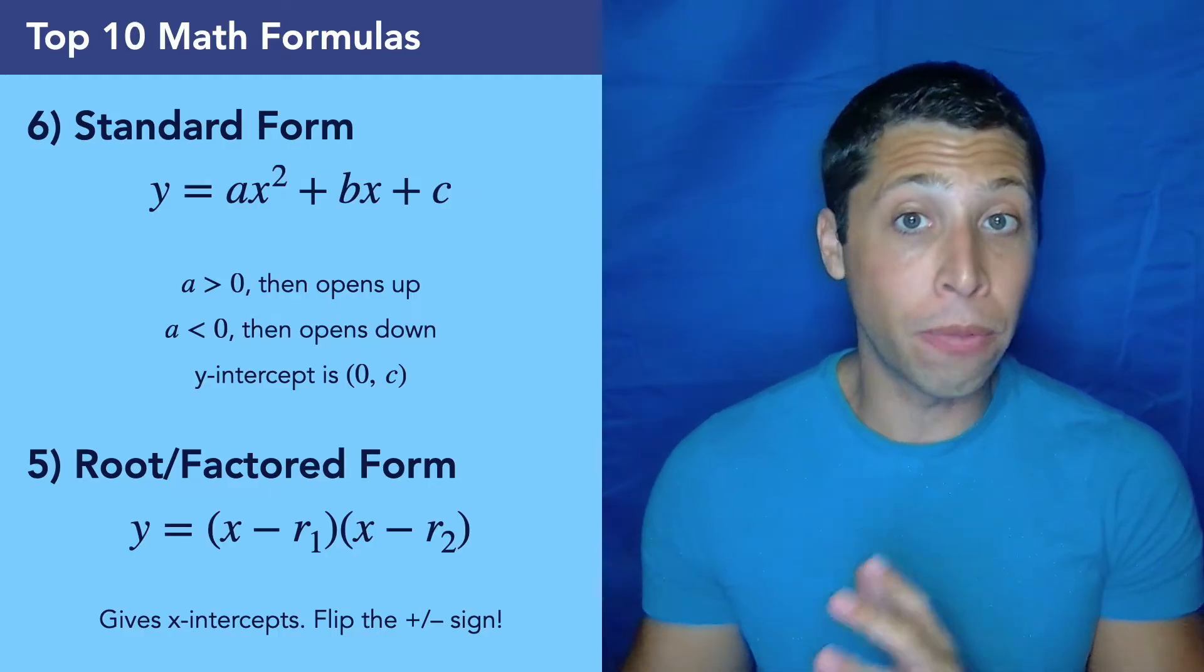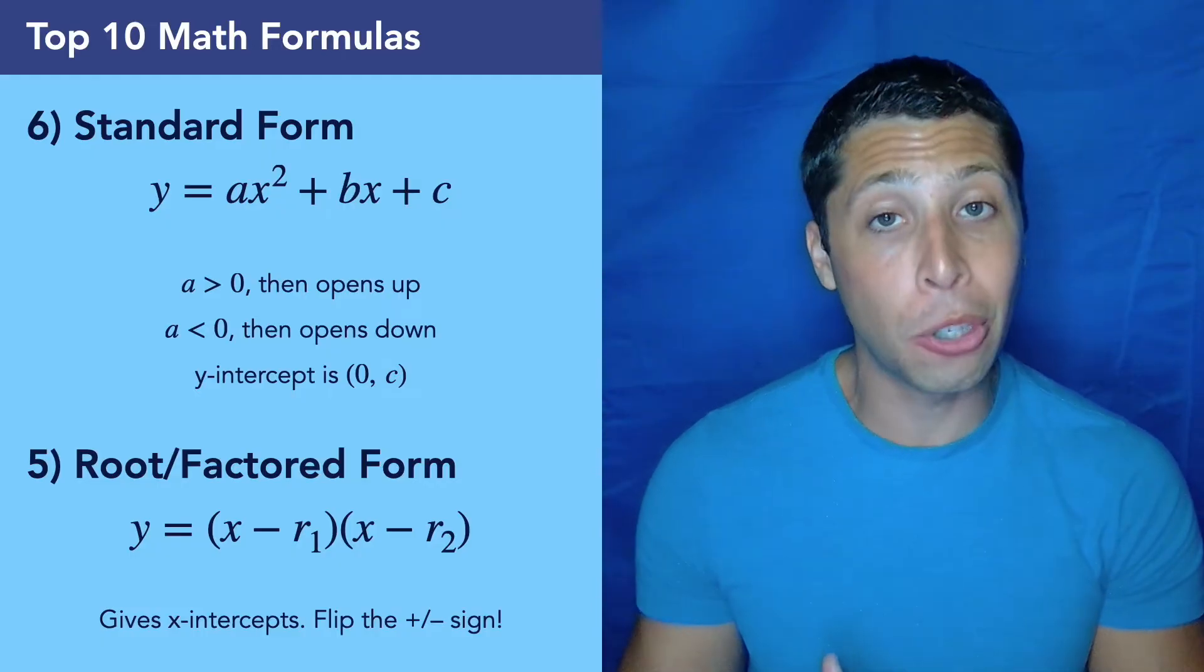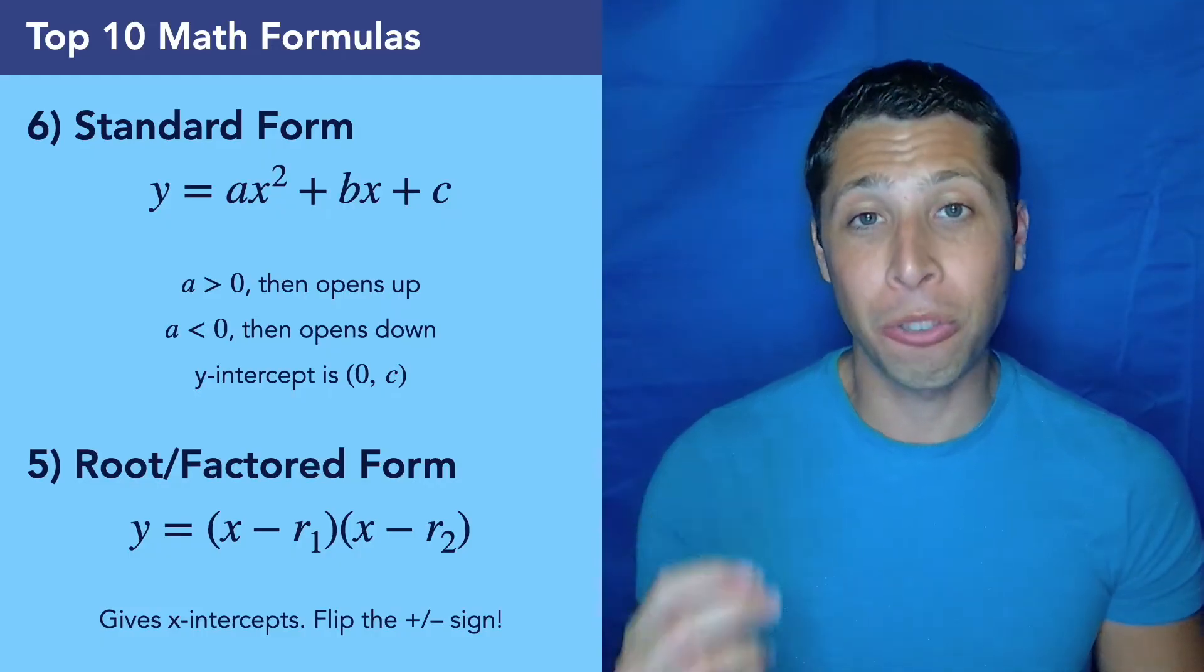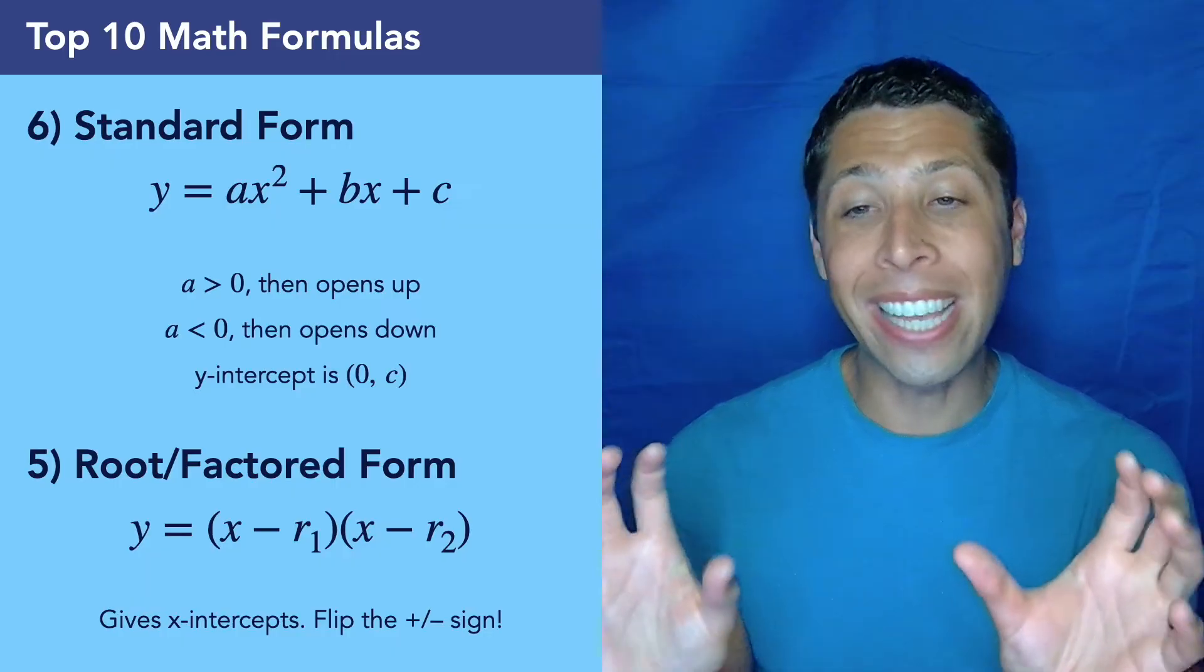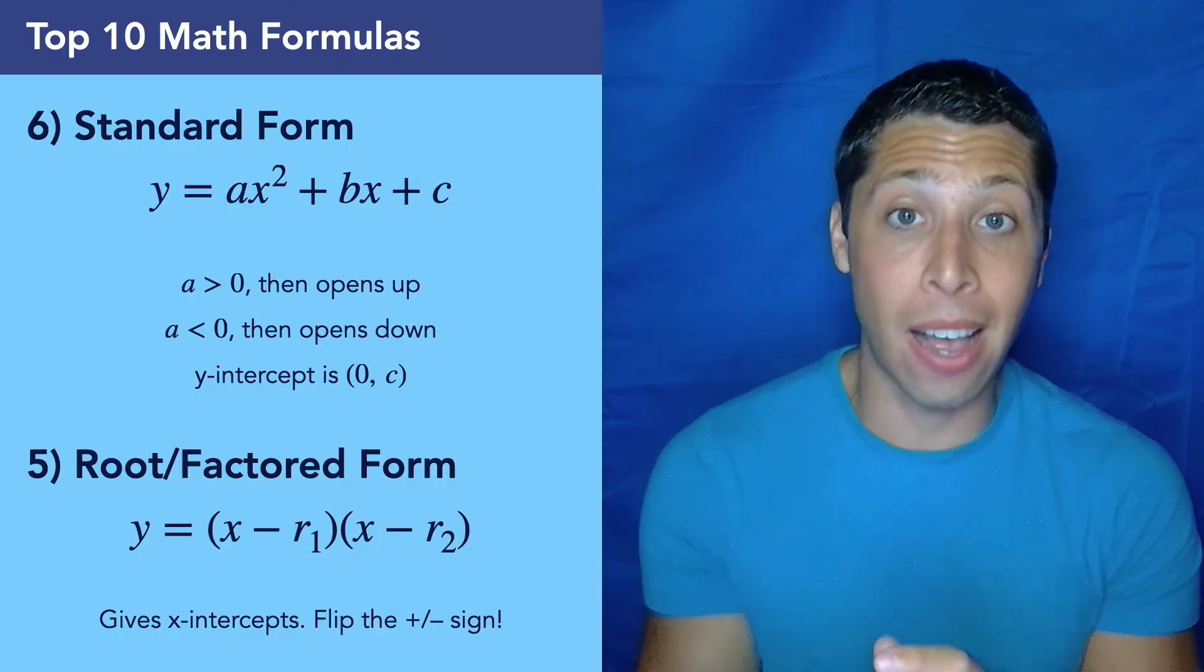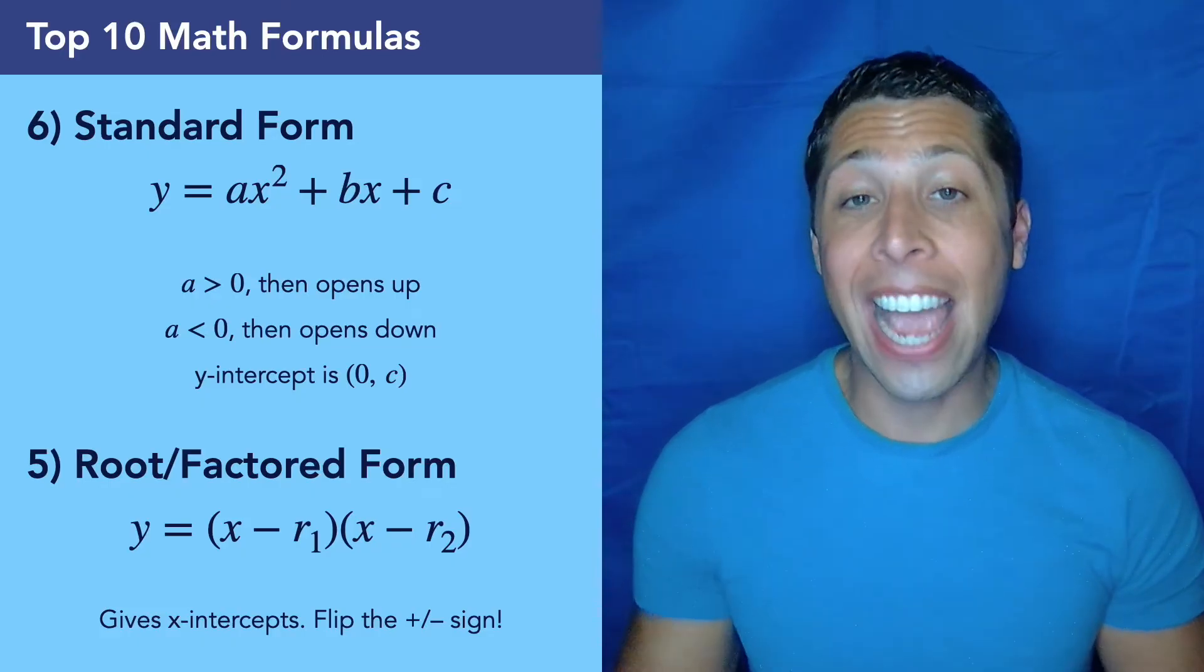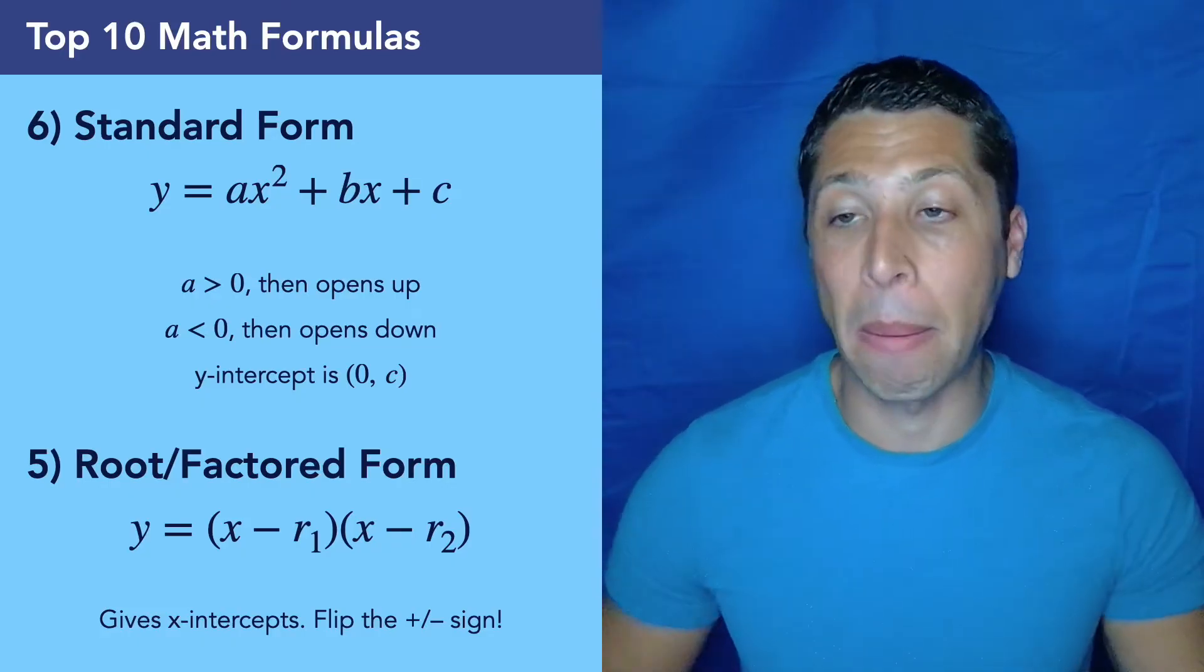And then for the root or factored form, the reason we do that is to find the x-intercept of the parabola. There's usually going to be two of them when we do this. But also just remember that when we factor, we get these little parentheses terms, but the actual root is going to be the flipped sign. So if it says like minus 3, x minus 3, that's telling us the x-intercept is positive 3. It's a very common mistake to make.